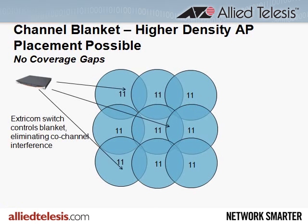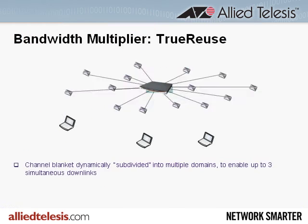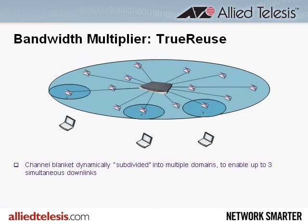For example, the Extracom wireless LAN switch, in stark contrast to microcell controllers, is able to carefully control the channel blanket in order to eliminate co-channel interference between the APs. And it gets even better. Extracom has patented technology called TrueReuse, which enables up to three simultaneous downlinks on a channel blanket, effectively tripling the downlink capacity of a single channel.